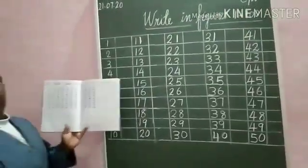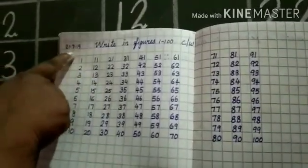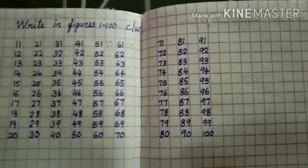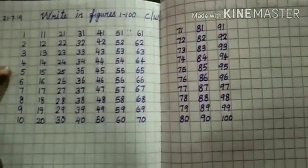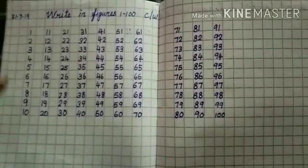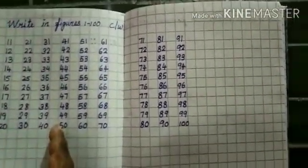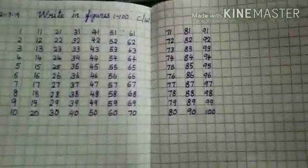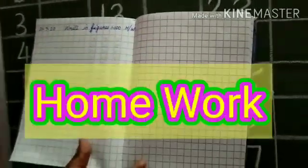Now take a number work copy. See, you have to write the heading, date, write in figures. Then you have to write one to ten, then leave the column, then write from one to hundred. And you have to write on the right side of the page C.W. And you have to write in the next page, write in figures, H.W., homework. So write in figures, one to hundred, homework.